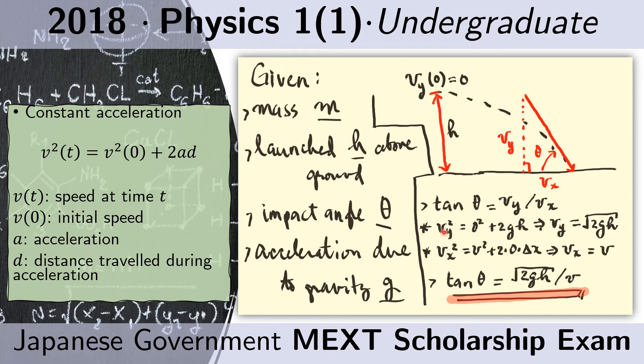And so this equation becomes this, and we can solve for the speed along the y axis and we get this.